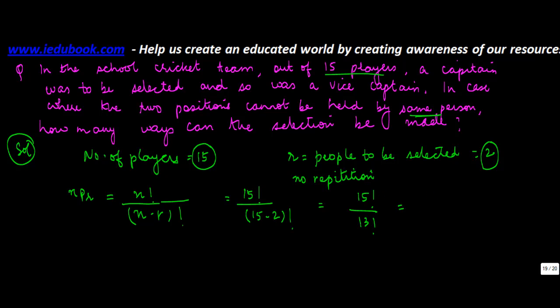Now, factorial 15 can be written as 15 into 14 into factorial 13 upon factorial 13. This goes and this goes, cancel out 15 into 14, which is 210 ways.